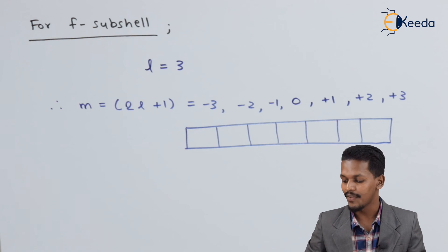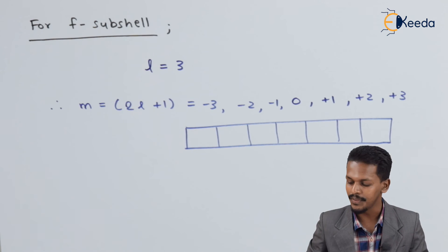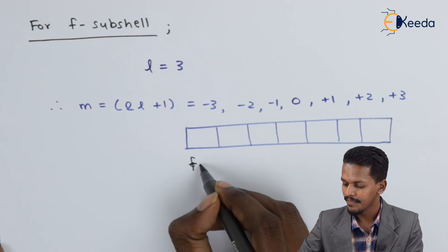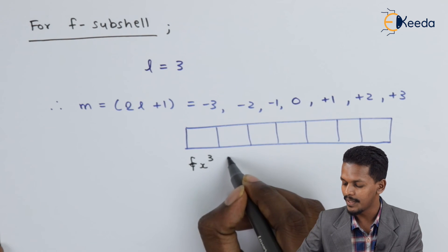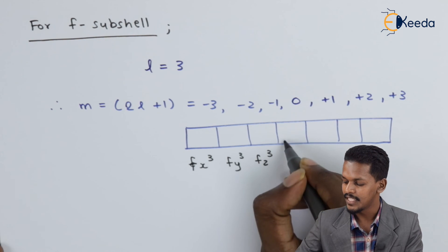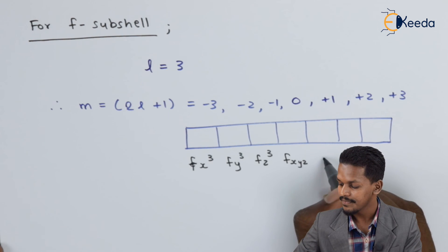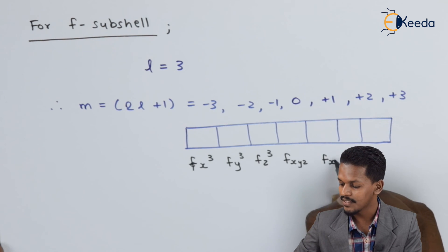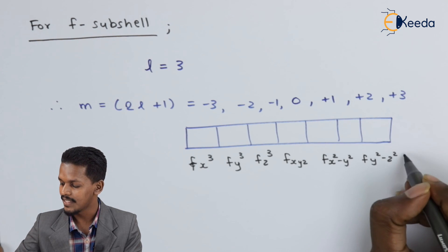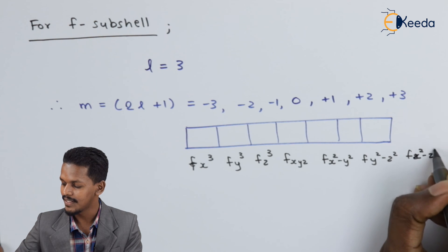The seven F sub-shell orbitals have different representations: Fx³, Fy³, Fz³, Fxyz, F(x²−y²), F(y²−z²), and F(z²) or F(x²−z²).